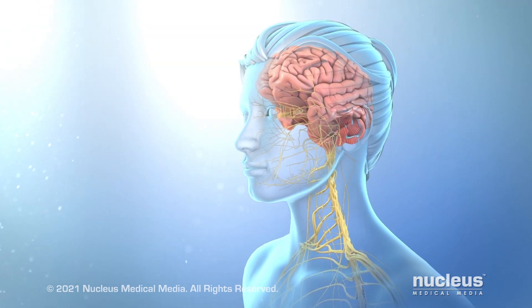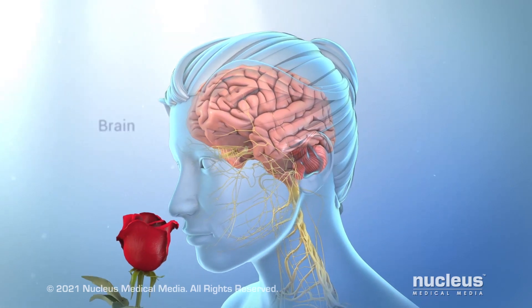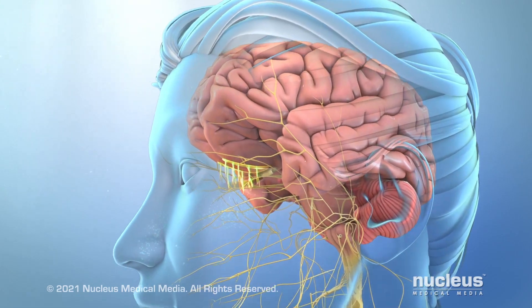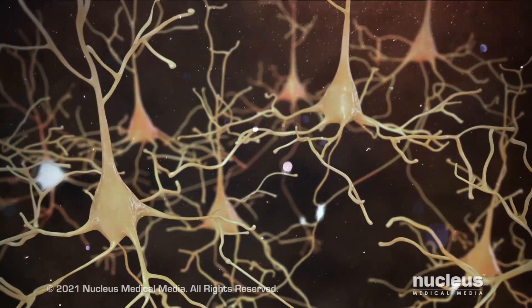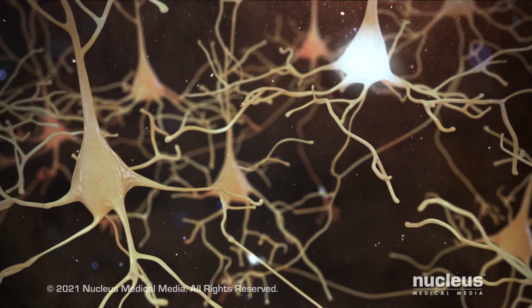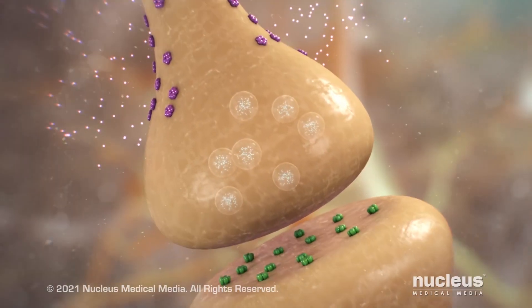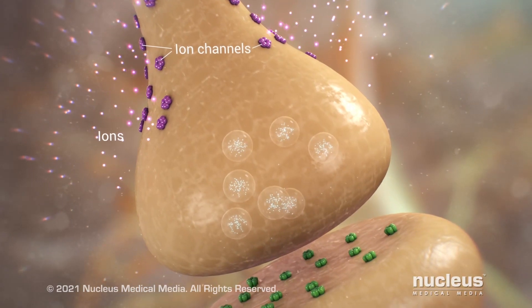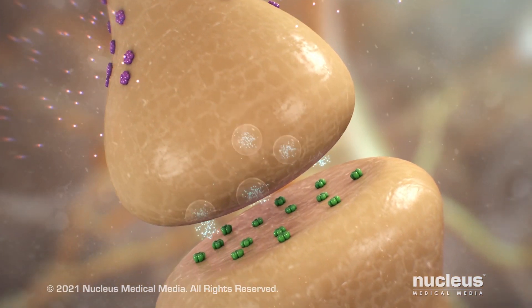To sense our world, your nerves send electrical signals to and from your spinal cord and brain. Sensors throughout our body collect information about our surroundings. This information is sent by signals to our brain through a series of nerve cells. Each electrical signal is carried from one end of a nerve cell to the other using passageways called ion channels. Charged particles, called ions, pass through the channels along the nerve, which helps generate the electrical current.